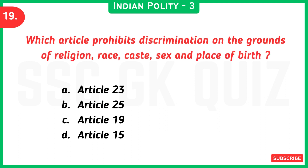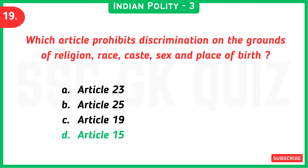Next question: which article prohibits discrimination on the grounds of religion, race, caste, sex and place of birth? Answer is option D, Article 15.